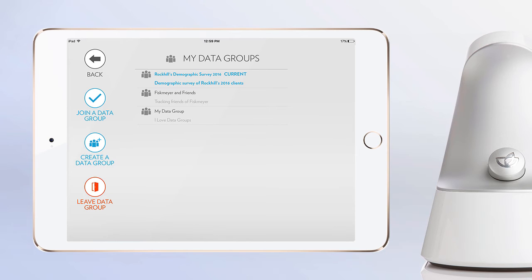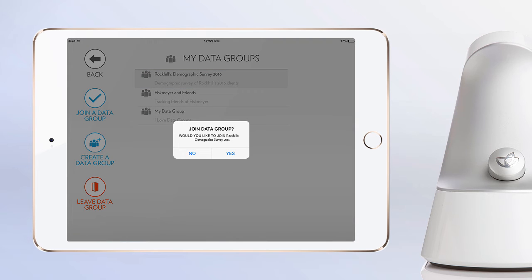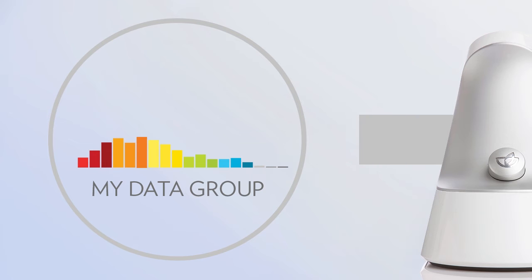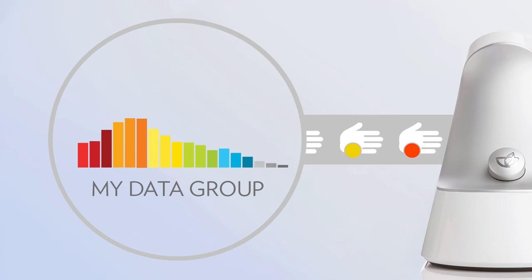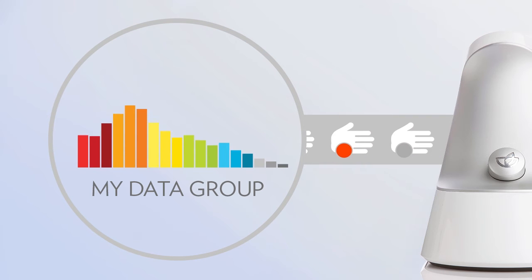Please note that you can only join one data group at a time. The data groups you join with your iPad will all be stored in the data groups page. In the center of the screen you will see a menu titled My Data Groups. Beneath this title will be a list of all the data groups your iPad has joined in the past. You can tap on any data group in this list and your iPad and scanner will rejoin that group again to add more results. When your scanner is connected to a data group, any scan you perform will automatically be added to the results. All you need to do is join a group and scan.